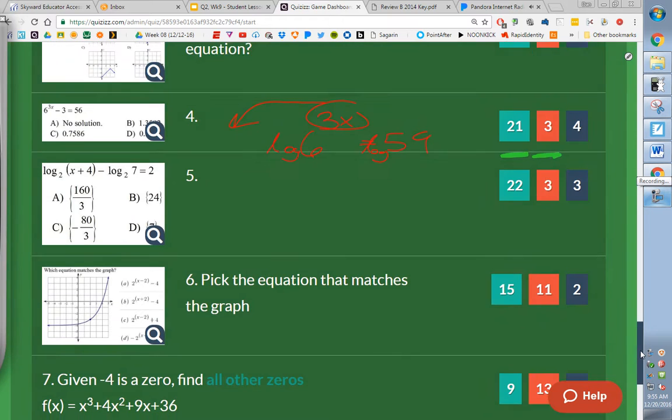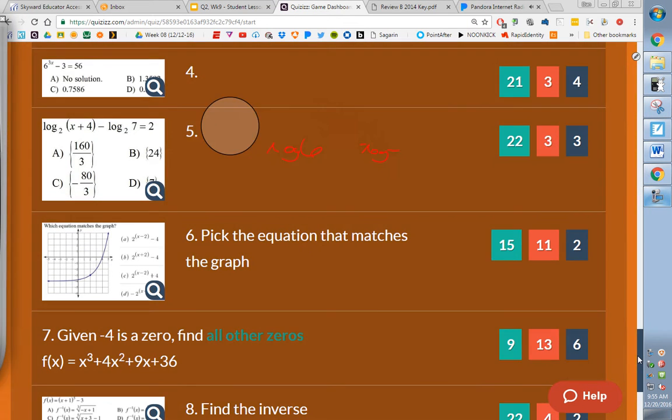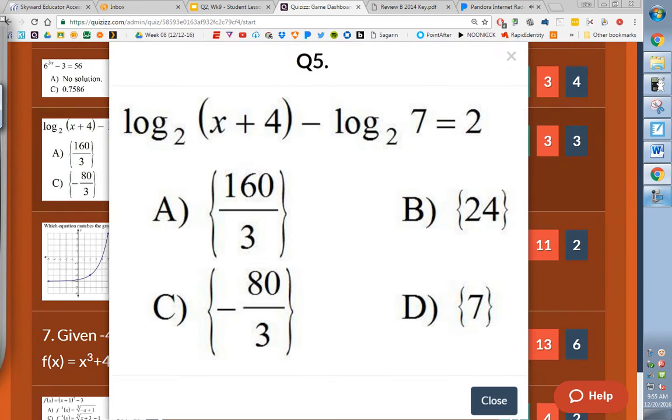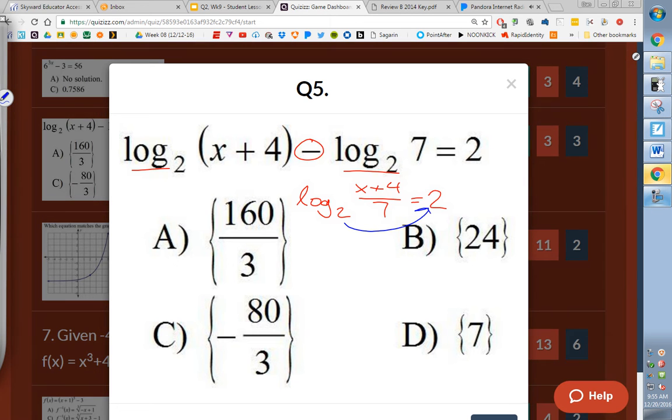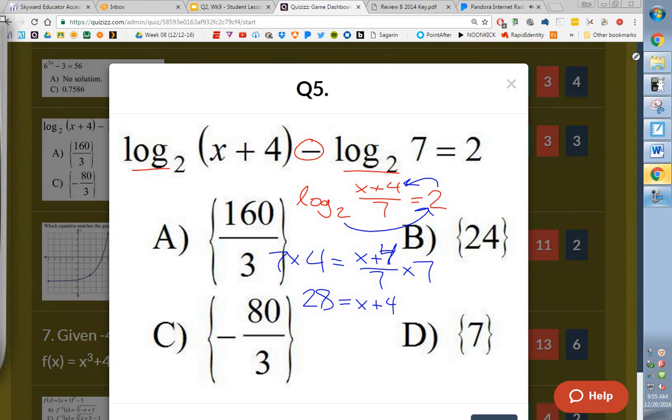And good. We did well on the next one as well. The log problem here. When we see this problem, what do we need to do first? Condense. I've got log base 2 two times, so I'm going to condense it. x plus 4 over 7. The minus sign tells me to make it a fraction. It's equal to 2. Then we've got log on one side and not the other, so we're first, last, second. 2 squared equals that. So 4 equals x plus 4 all over 7. Multiply by 7 to get the 7 out of the denominator. And then finish by subtracting 4, you get b, positive 24. Good there. We're doing good.